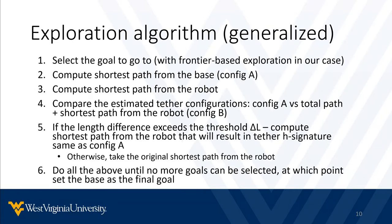Here is a generalized overview of the main algorithm. The first step is to select the goal to go to, which in our case is done using the frontier-based method. The second step is to compute the shortest path from the base to the goal – let's call that configuration A. Step 3 is to compute the shortest path from the robot to the goal, with step 4 comparing configuration A with the current total path plus the shortest path acquired in step 3 – let's call that configuration B.